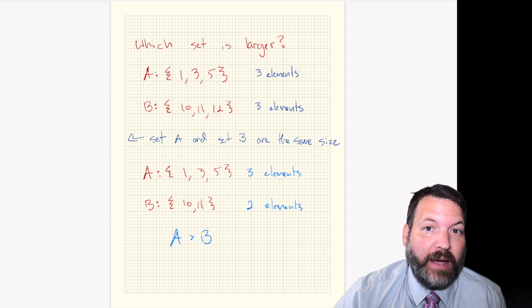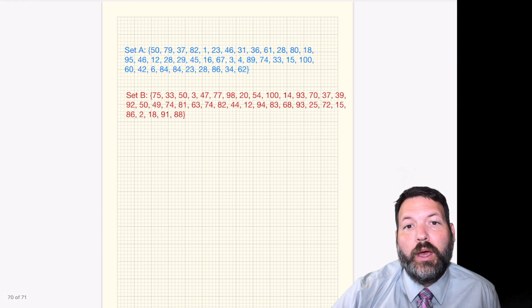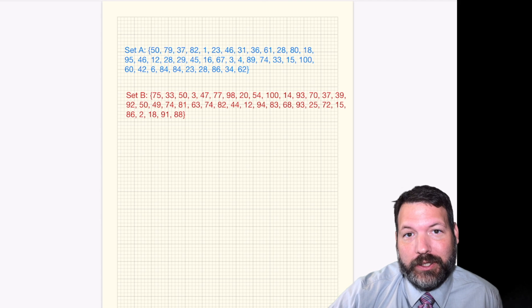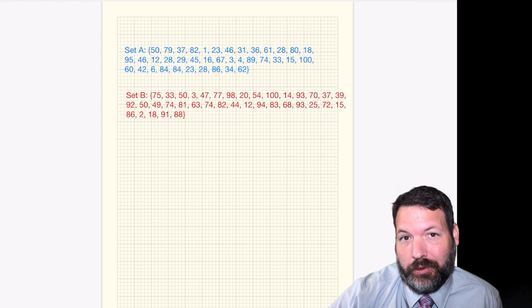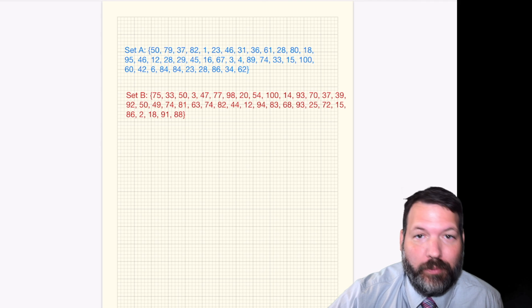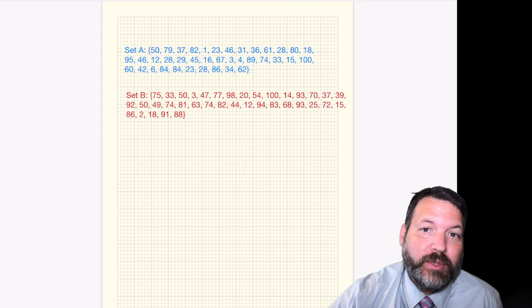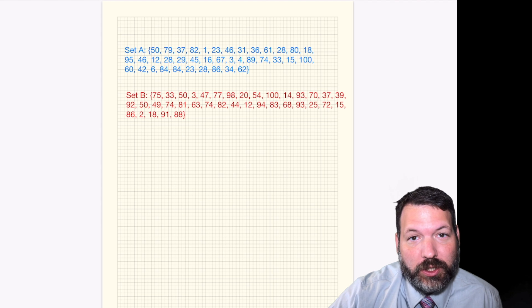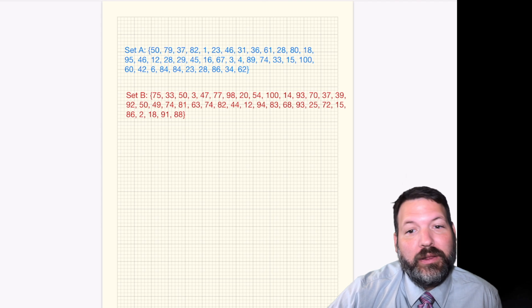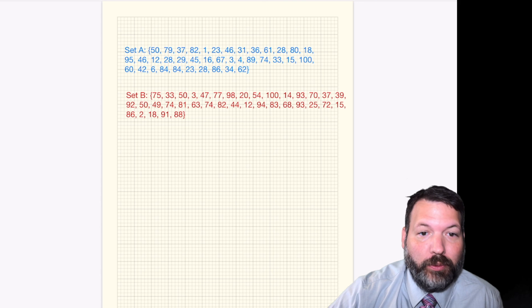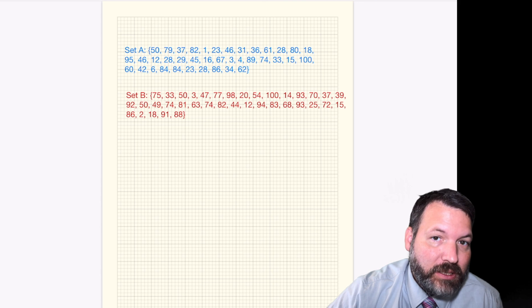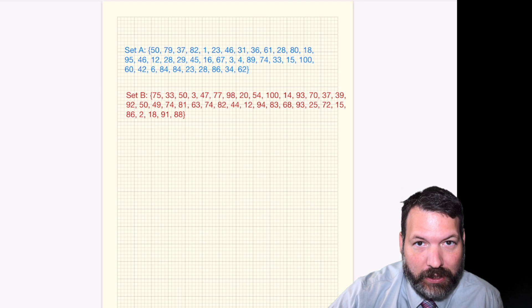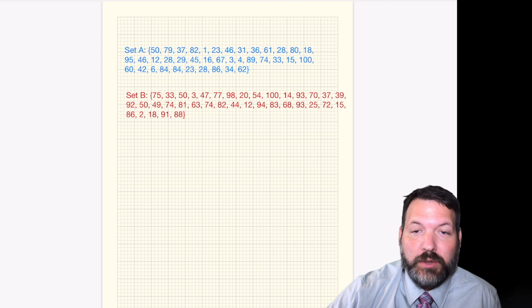But what if my elements were actually these two sets? Now all of a sudden, I'm not quite so sure how it is that I'm supposed to compare these. Or that's not really true. I'm sure how I'm supposed to compare them. I guess I'm supposed to count up how many elements are in set A and count up how many elements are in set B, and then compare those numbers just like we did before. But clearly, this is not going to be an exciting task for me to undertake. I don't want to sit here and count. What if I end up miscounting? And so what I need is a better way to count the items in these sets.